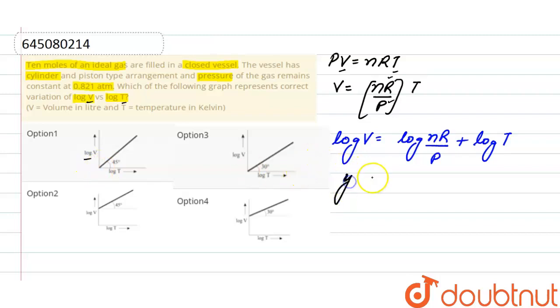Here, c equals log of nR divided by P, and the slope is 1, and on the x-axis we have log T. Slope is 1, that means tan θ equals 1, and tan θ equals 1 at 45 degrees.